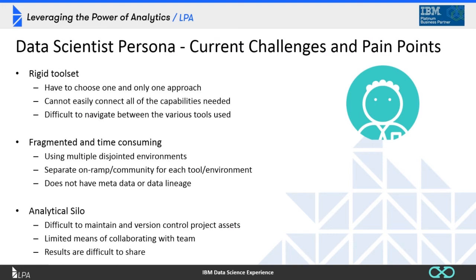Data scientists face several pain points. One is a rigid tool set — choosing one and only one approach can be limiting, and navigating between different tools can be a problem. In reality, data science groups have opened things up and let people use whatever tool they want, frequently resulting in different data scientists having different platforms installed on different machines, making collaboration and sharing difficult. If you don't have the right version of Python that your collaborator is using, you may not be able to work with their script.